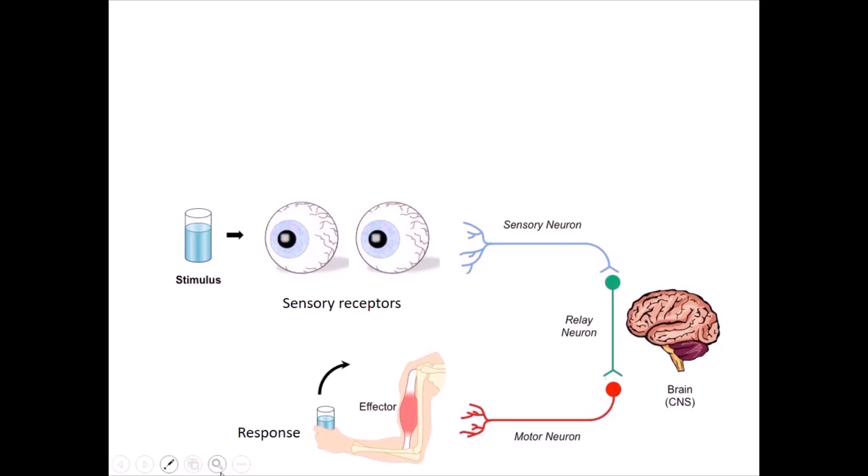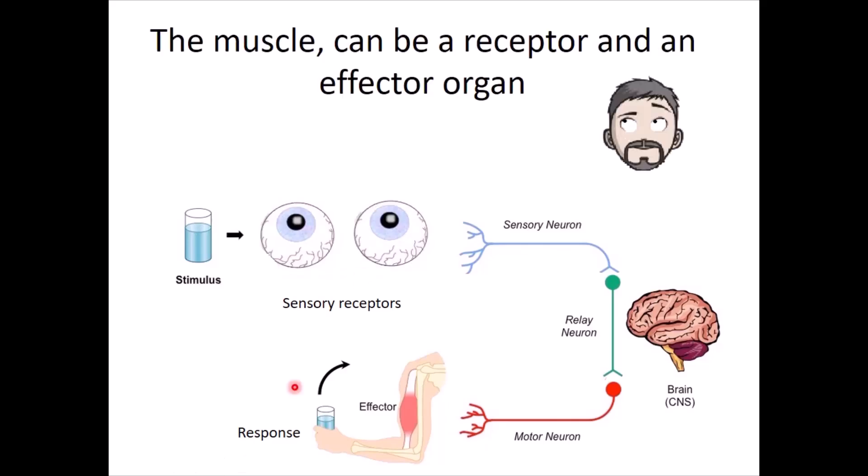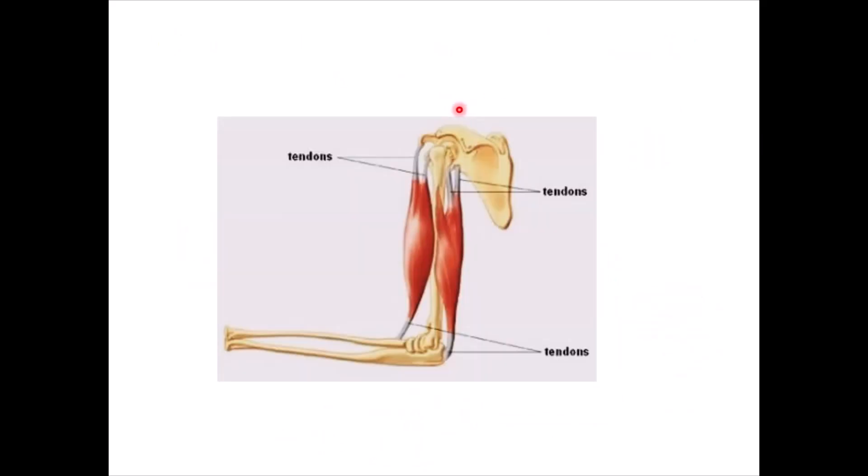However, here we are also saying that the muscle can also be a receptor and an effector organ at the same time. So what does that mean? We all know that muscles have a primary role of contraction. They are able to pull body parts closer to each other or push them further away from each other through being attached to these bones through tendons and by having contractile abilities or capabilities.